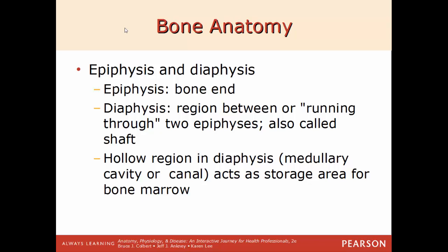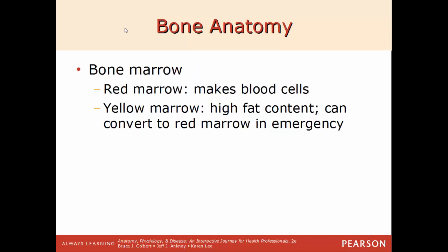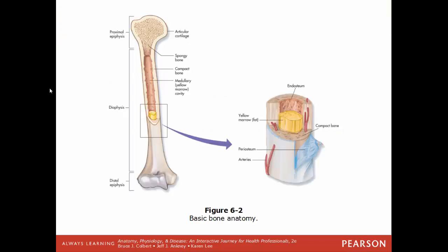The next two structures are the epiphysis and diaphysis. The epiphysis is the end of a bone — think E for end and E for epiphysis. The longer part in the middle, the shaft of the long bone, is called the diaphysis. Within the diaphysis, you'll find a hollow region called the medullary cavity or medullary canal, which acts as a storage area for bone marrow. There are two types: red marrow, which makes blood cells, and yellow marrow, which is very high in fat content. In an emergency situation, this fat can be converted into red marrow.